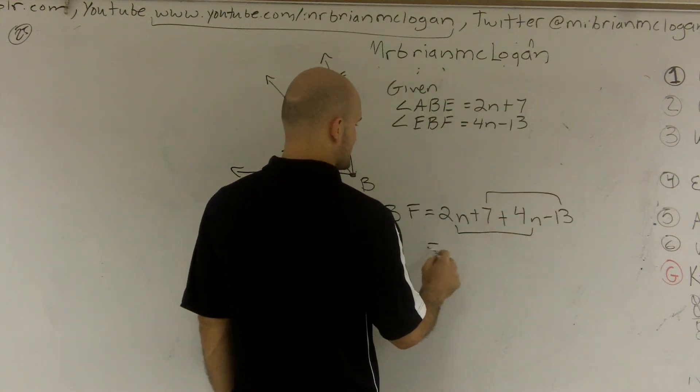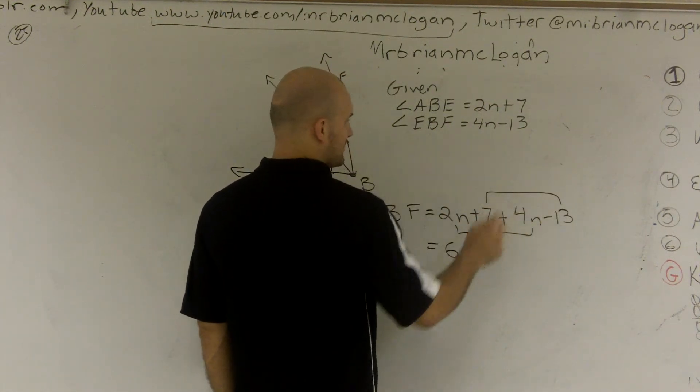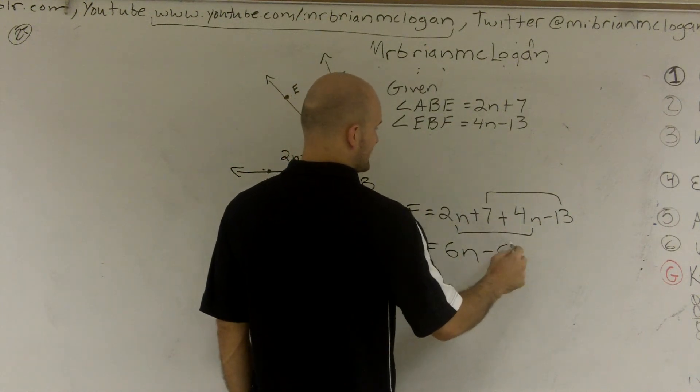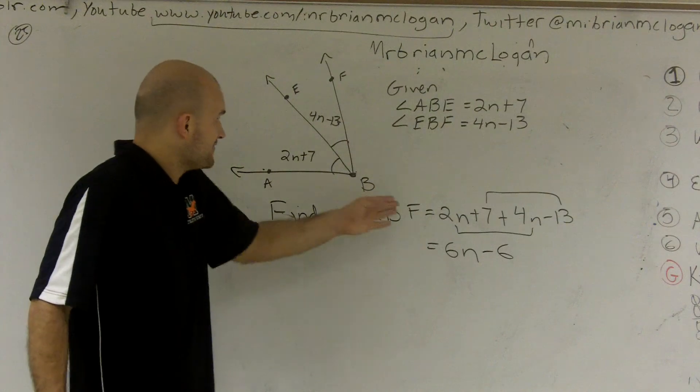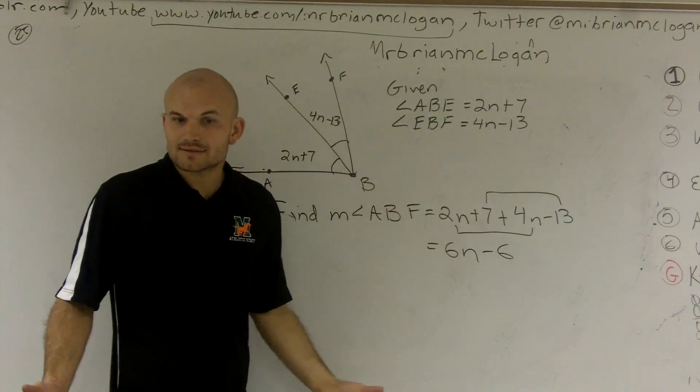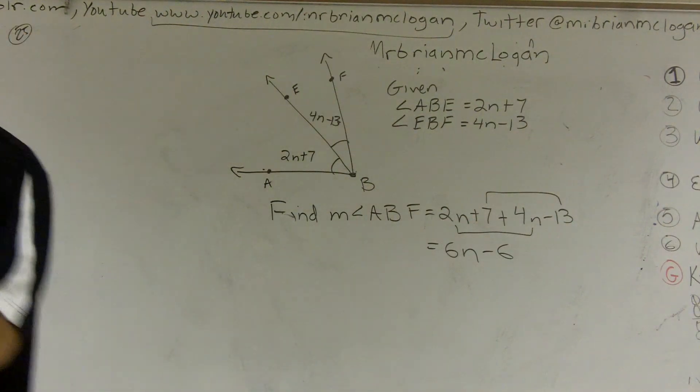2N plus 4N is equal to 6N. 7 plus negative 13 is a negative 6. Therefore, the angle of ABF is 6N minus 6. So that's how you find the angle.